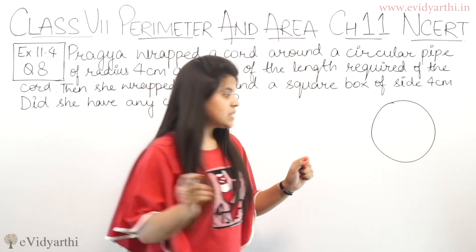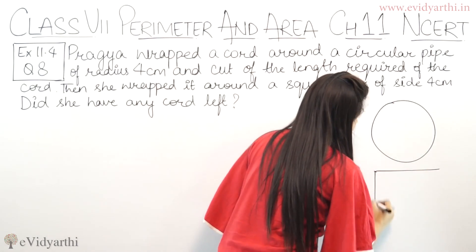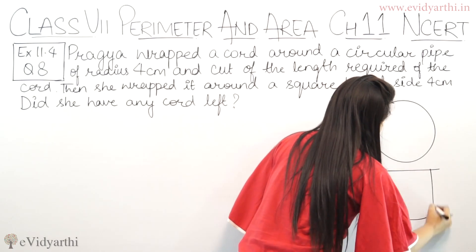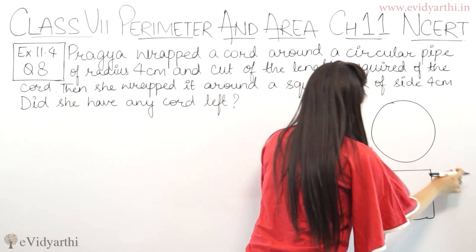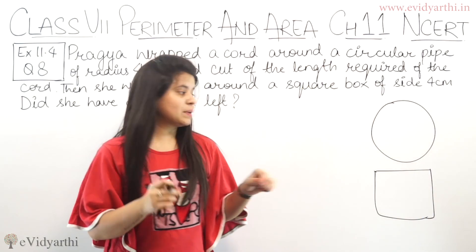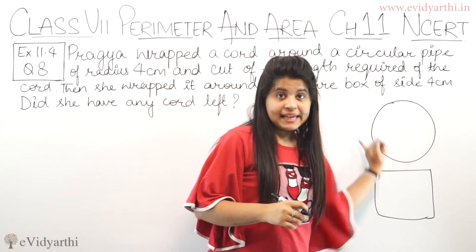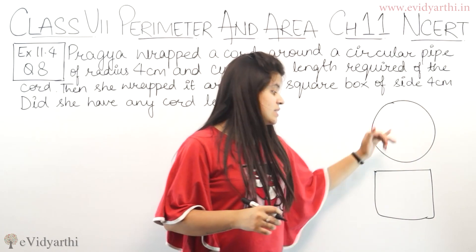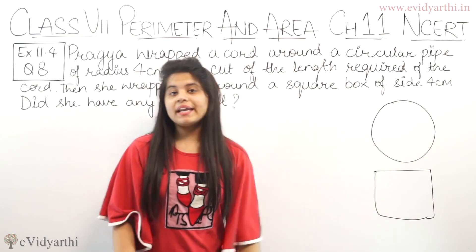Then the length of the cord we have wrapped around the square box — we need to find whether the length of the cord was more or less.